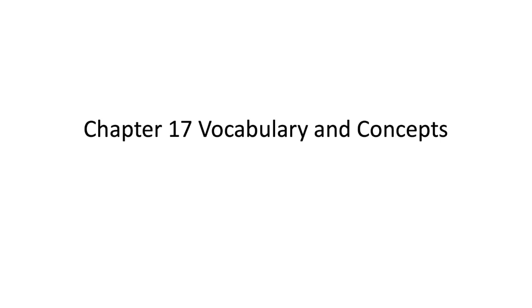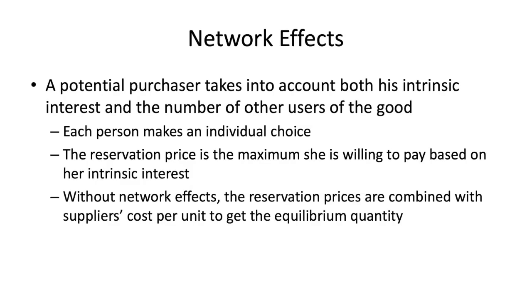Welcome to another exciting video lecture. This one is about chapter 17 on network effects. To review quickly, the purchaser of a product takes into account their intrinsic interest — how much the product is useful to them as a baseline — and then also the number of other users of that good. Each person makes an individual choice, and the reservation price is the maximum that person is willing to pay based on intrinsic interest. Those are combined with the cost per unit to get the equilibrium quantity.